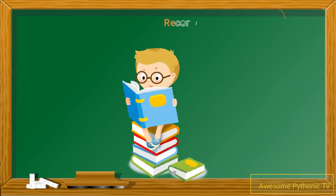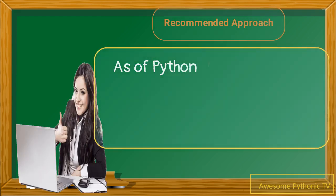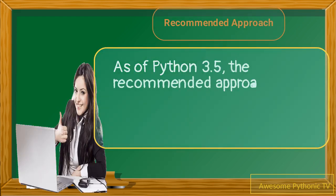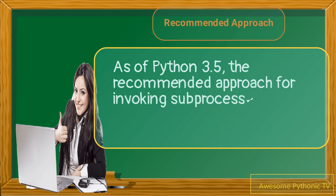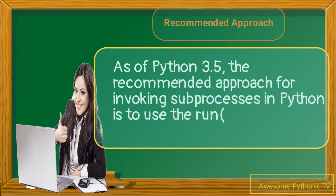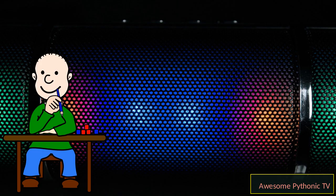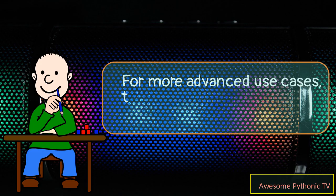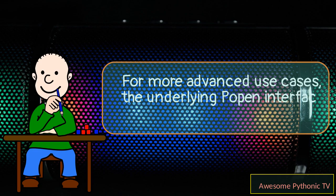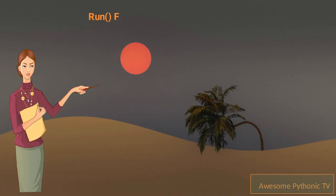What is the recommended approach for invoking subprocesses in Python? As of Python 3.5, the recommended approach is to use the run function for all use cases it can handle. For more advanced use cases, the underlying Popen interface can be used directly.